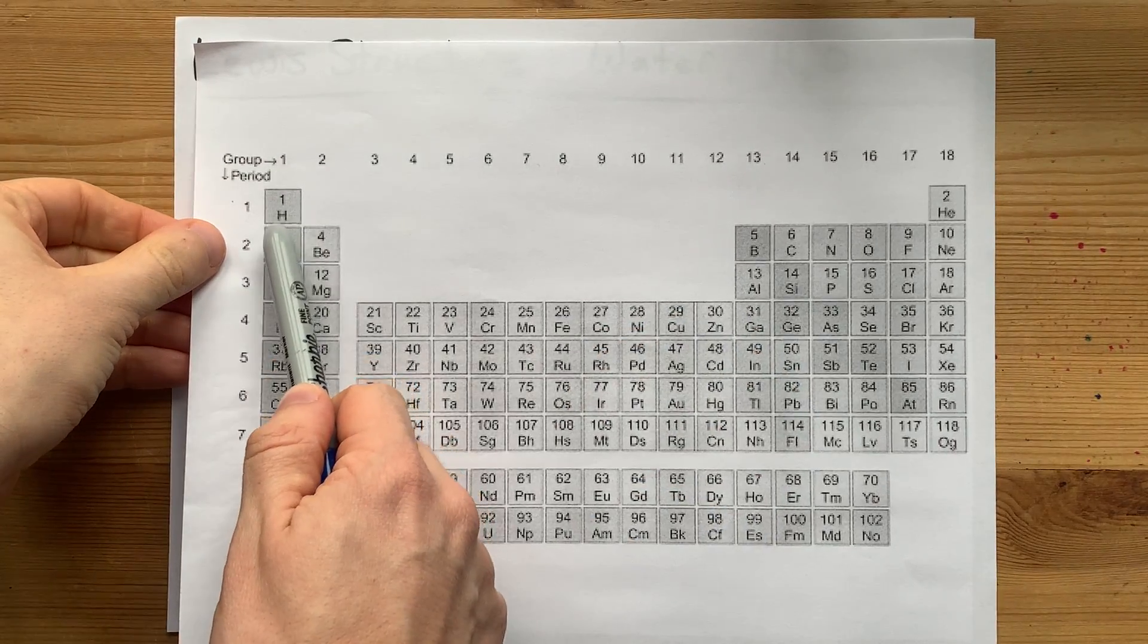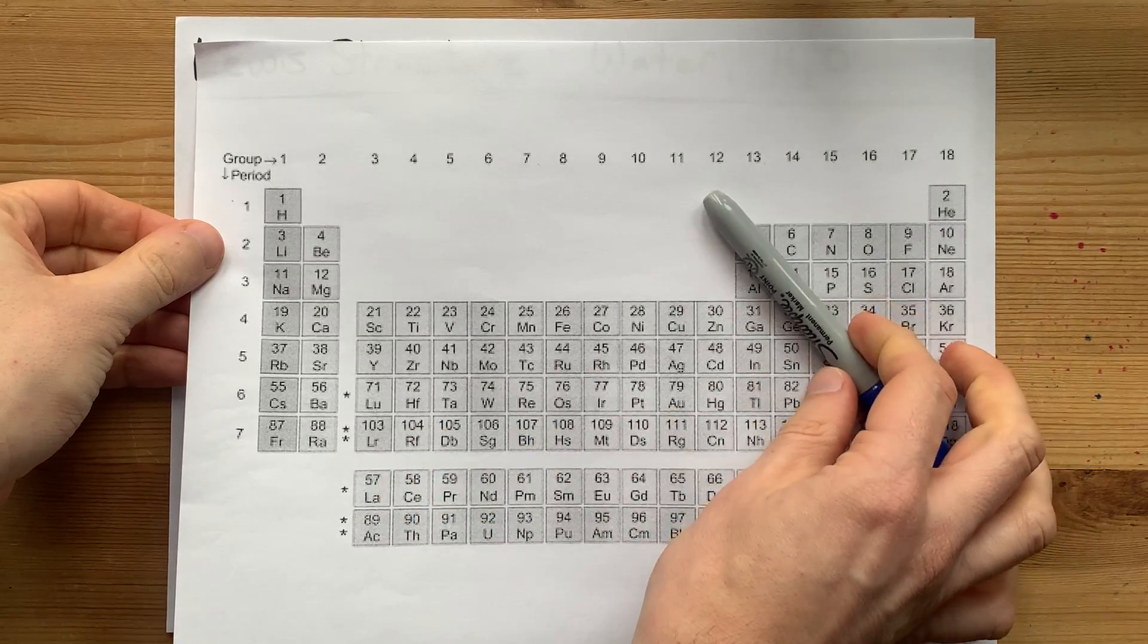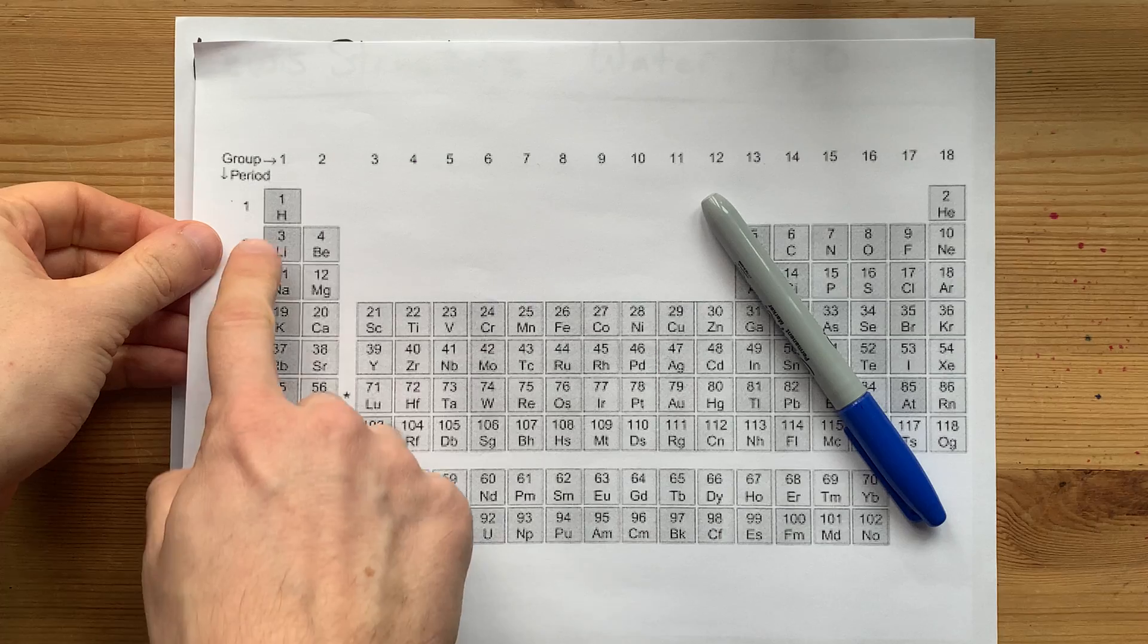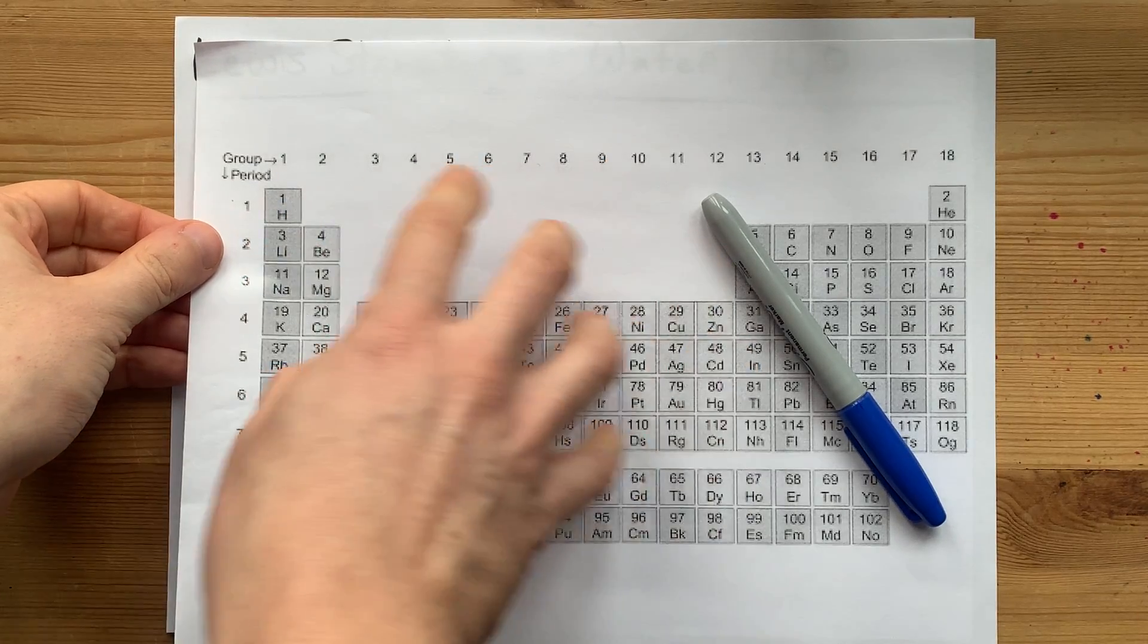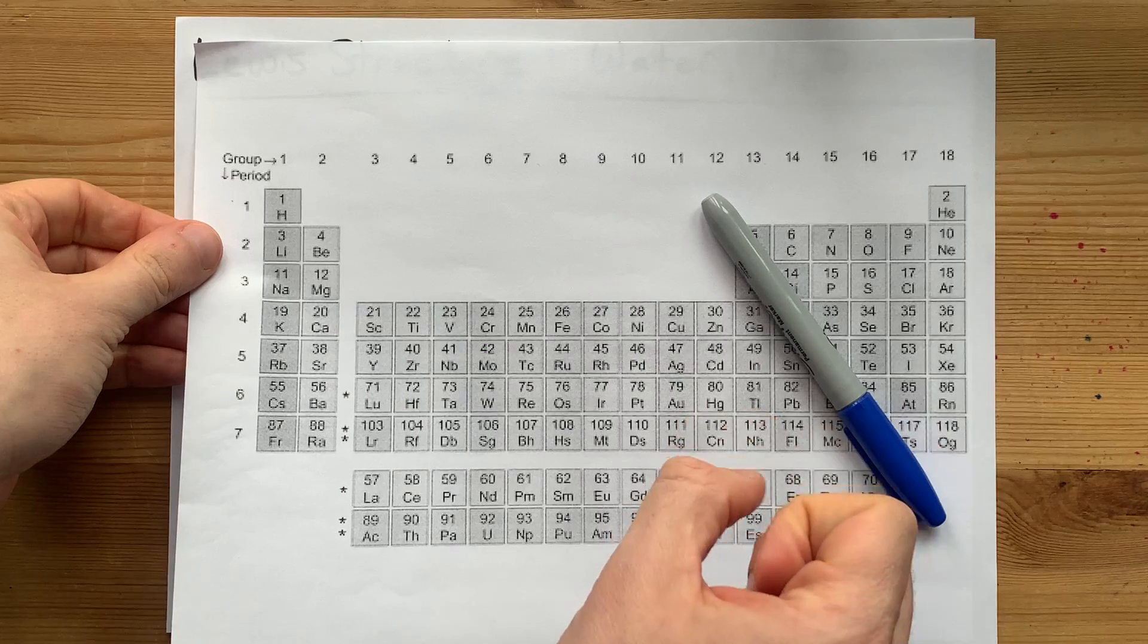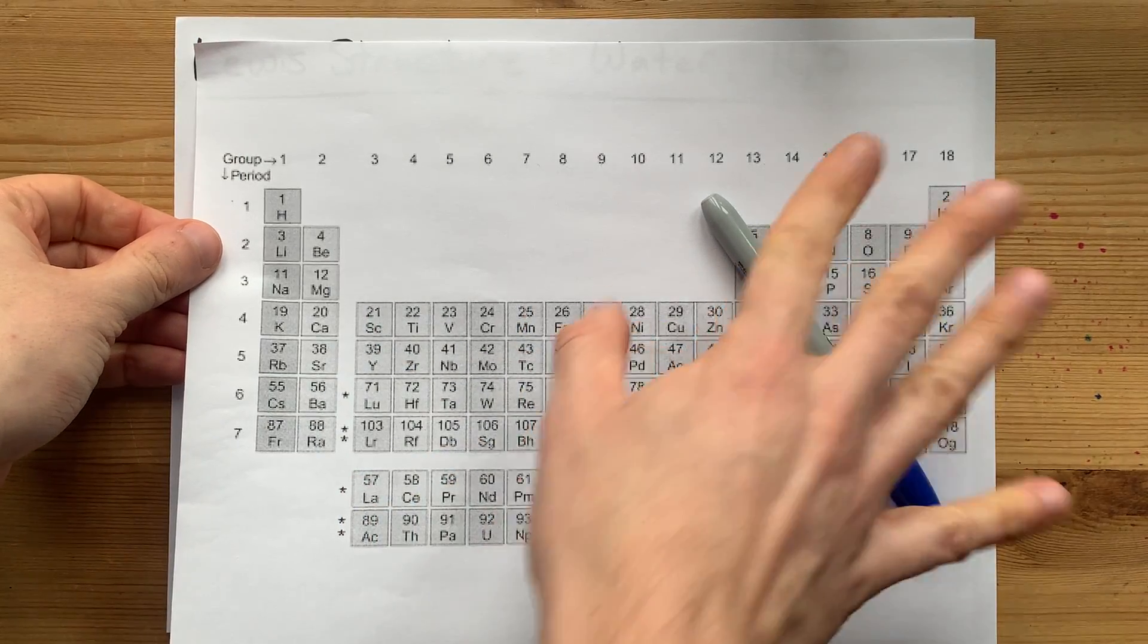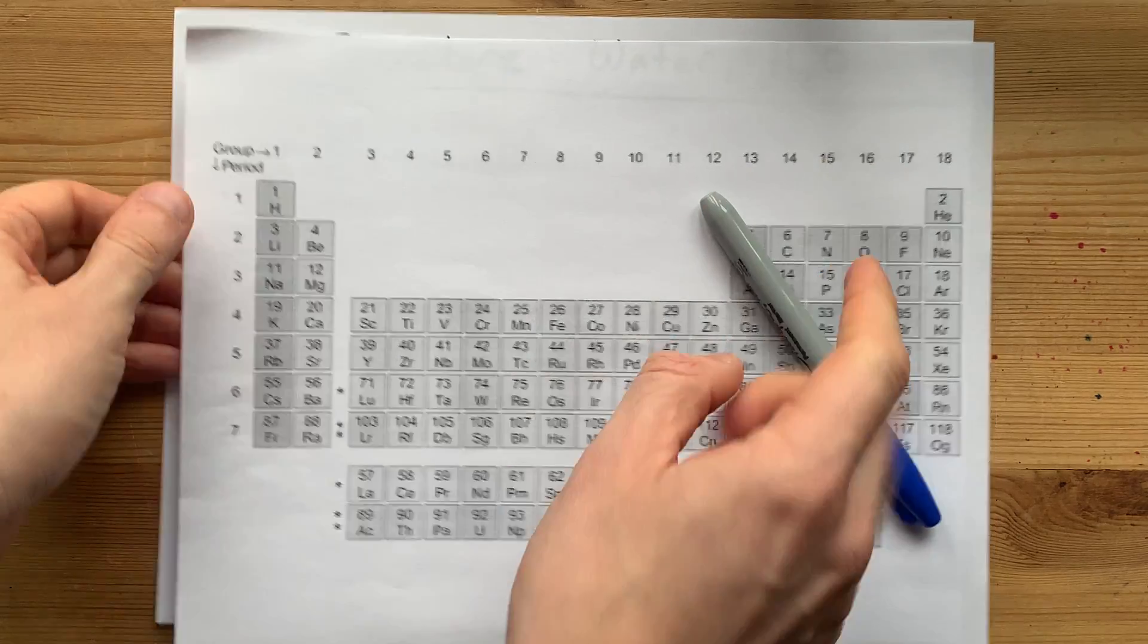I want to point out H is a non-metal. Even though it comes from the left-hand side of this staircase, you have to remember this is the only non-metal that is to the left of the staircase. Everything else is a metal. Hydrogen, non-metal. Oxygen to the right of the staircase, also a non-metal.